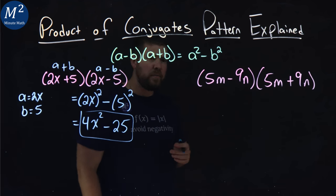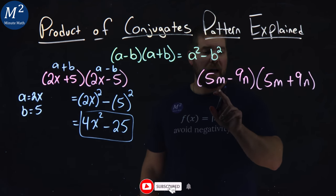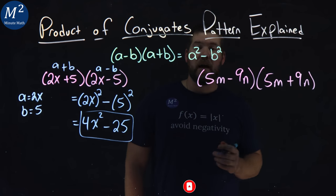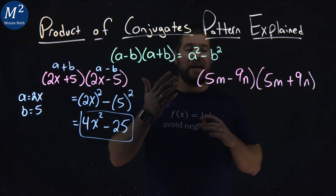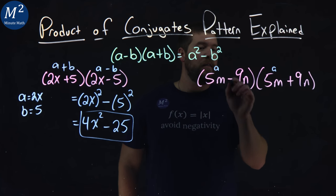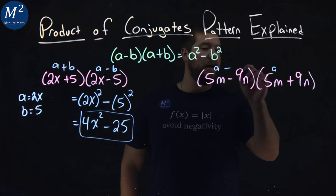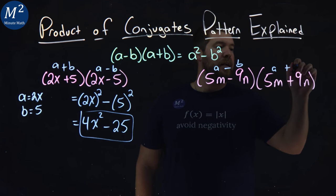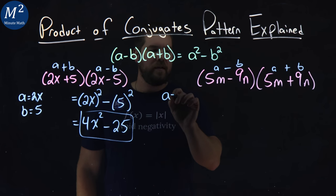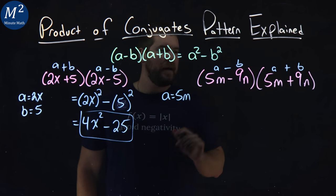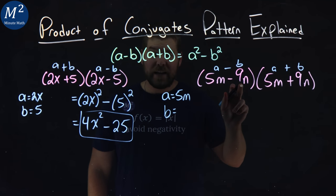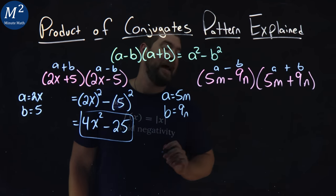Let's try another example here. We have 5m minus 9n times 5m plus 9n. What are our A's and B's here? If 5m is our A, then we have A minus our 9n, which is our B, and plus a 9n, which is the B there. So let's label it out. A is equal to 5m, and B is just equal to the 9n.